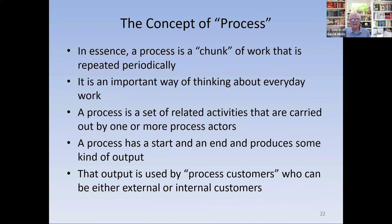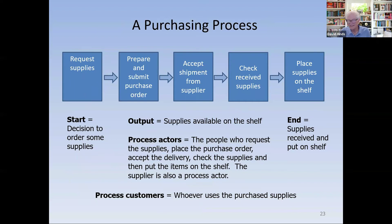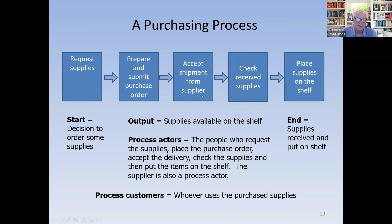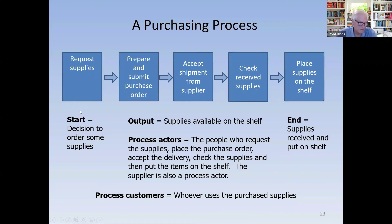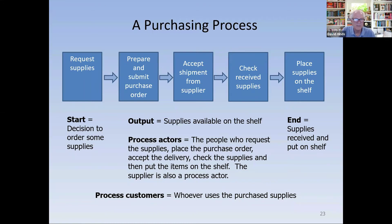Consider a purchasing process as an example — a simple process with five steps: requesting a supply, preparing and submitting a purchase order, accepting the shipment from the supplier, checking the received supplies, and putting them on the shelf. The start point is the decision to order supplies; the end point is when supplies have been received and put on the shelf. The output is supplies available on the shelf. The process actors are the people doing these steps — whoever requests supplies, places the order, and so on. Even the supplier is a process actor.